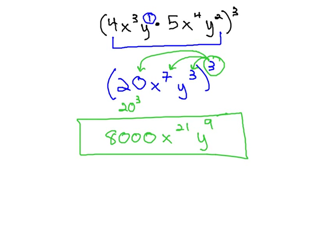We know we are done, because there's only a single x and a single y in the expression. We simplified by using order of operations as a guide to know which exponent property to apply first.